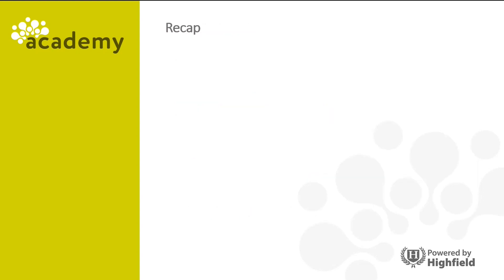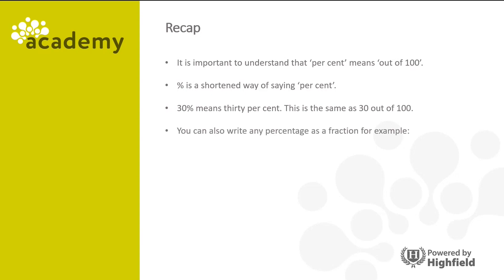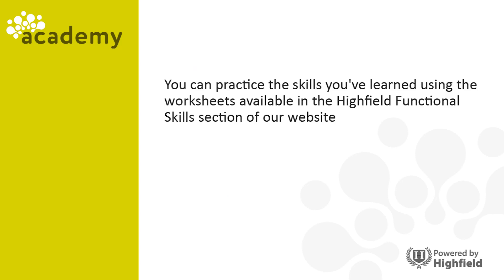Let's recap. It's important to understand that % means out of 100, and the percentage sign is a shortened way of saying percent. 30% means 30 out of 100, and you can write any percentage as a fraction — for example, 30% equals 30 one-hundredths. For percentage increase or decrease, find the percentage first, then add or subtract accordingly. Thanks for participating, and I'll see you in the next session.